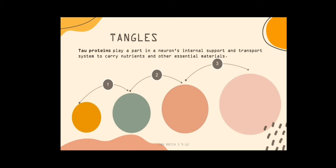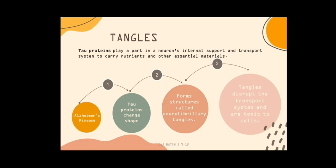Tangles — tau proteins play a part in the neurons' internal support and transport system to carry nutrients and other essential materials. In Alzheimer's disease, tau proteins change shape and form structures called neurofibrillary tangles, which disrupt the transport system and are toxic to cells.